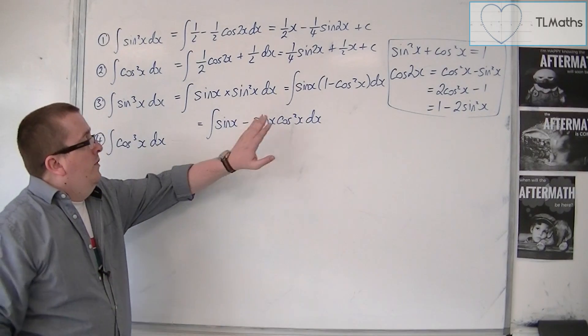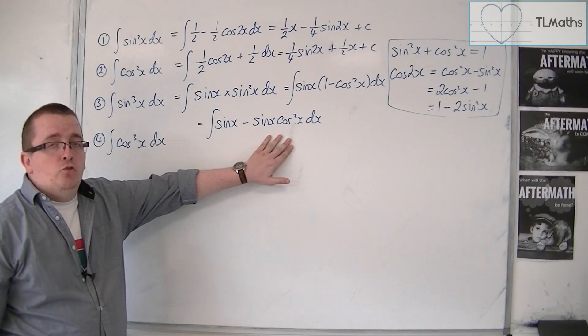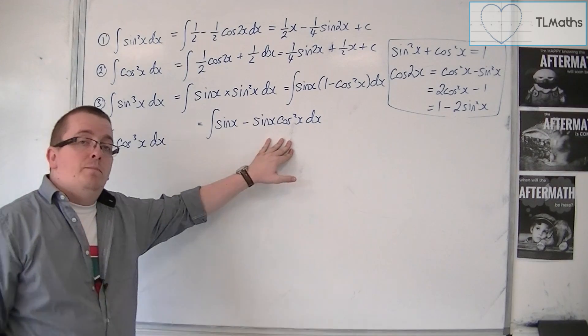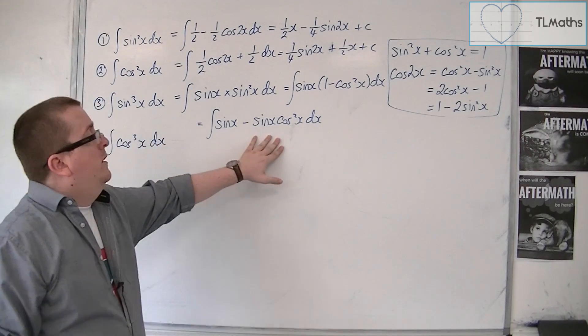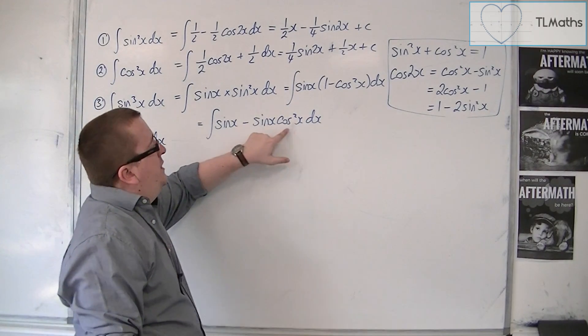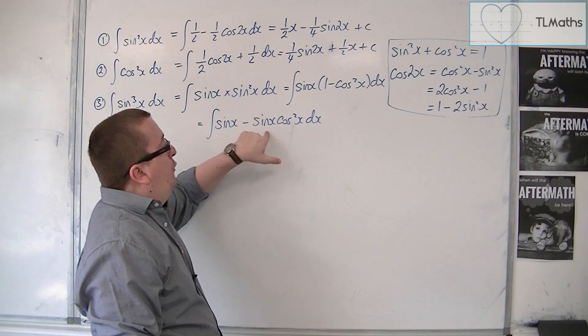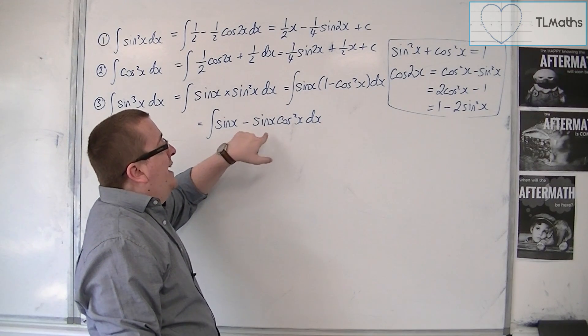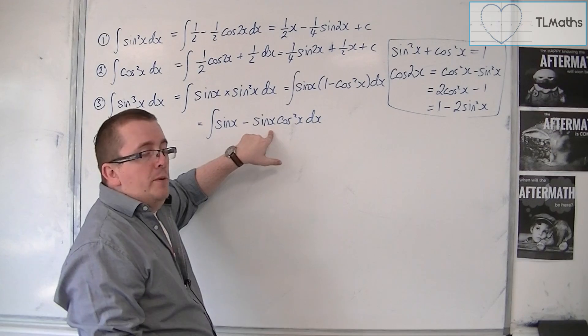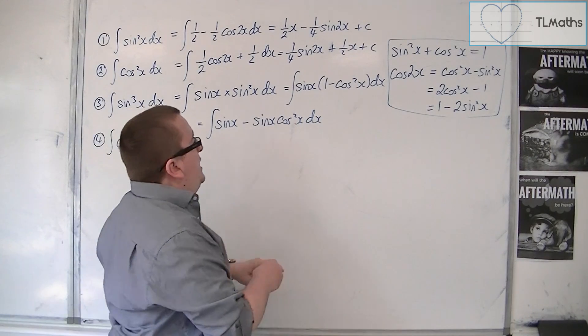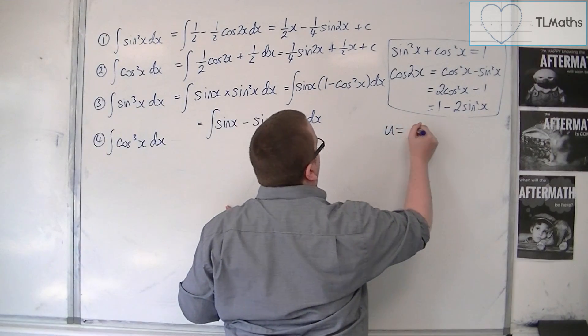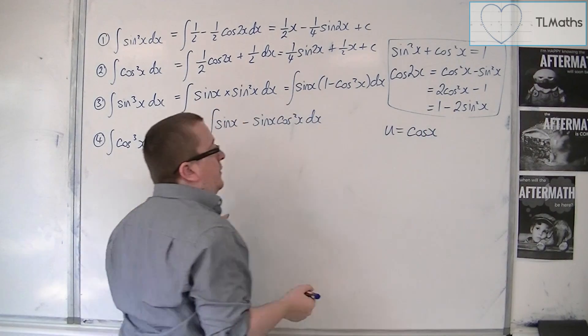But this part we can integrate using integration by substitution. Because we've got the derivative of cosx here, or a form of it, that then allows us to use integration by substitution. So we're going to use u equals cosx as our substitution.